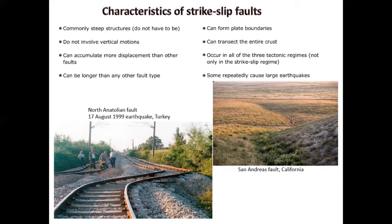The San Andreas Fault zone is a right-lateral strike-slip fault, which means as the North American Plate moves to the south, the Pacific Plate is moving to the north. These type of structures can transect the entire crust. If you cross-cut the entire crust, under the crust we have higher temperature and pressure conditions, and at the base of the crust we may have some partial melt.